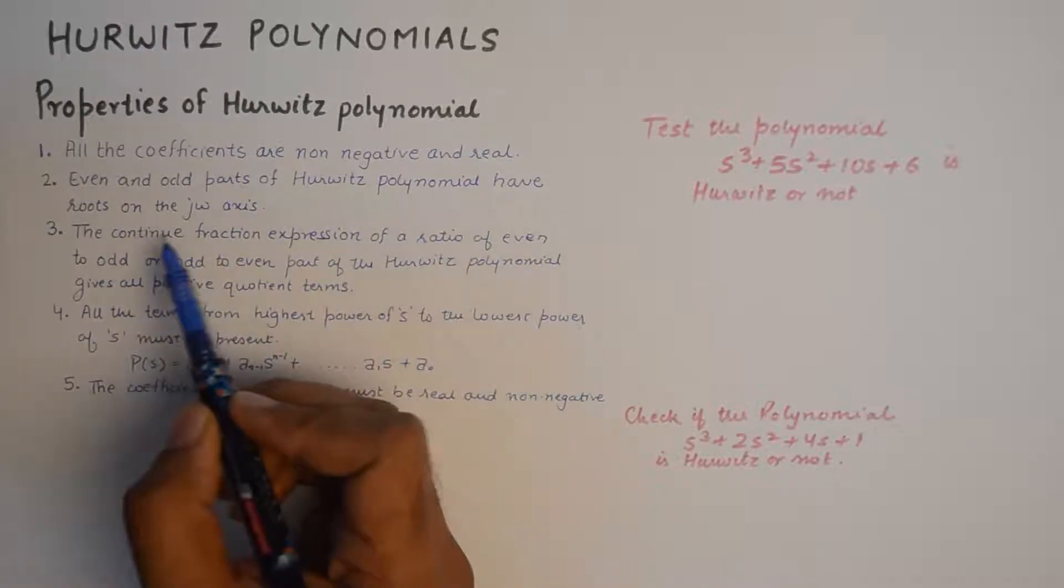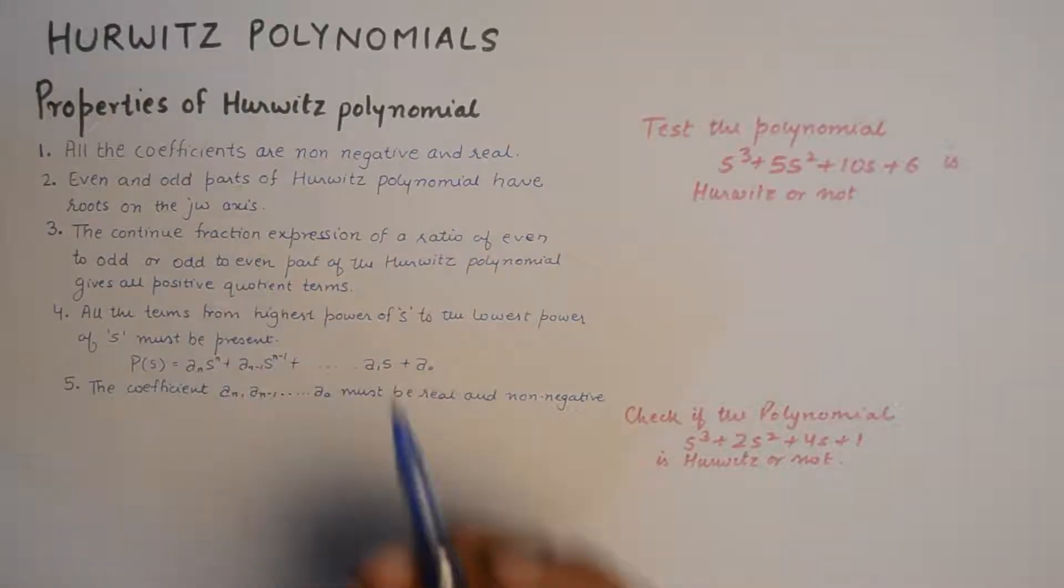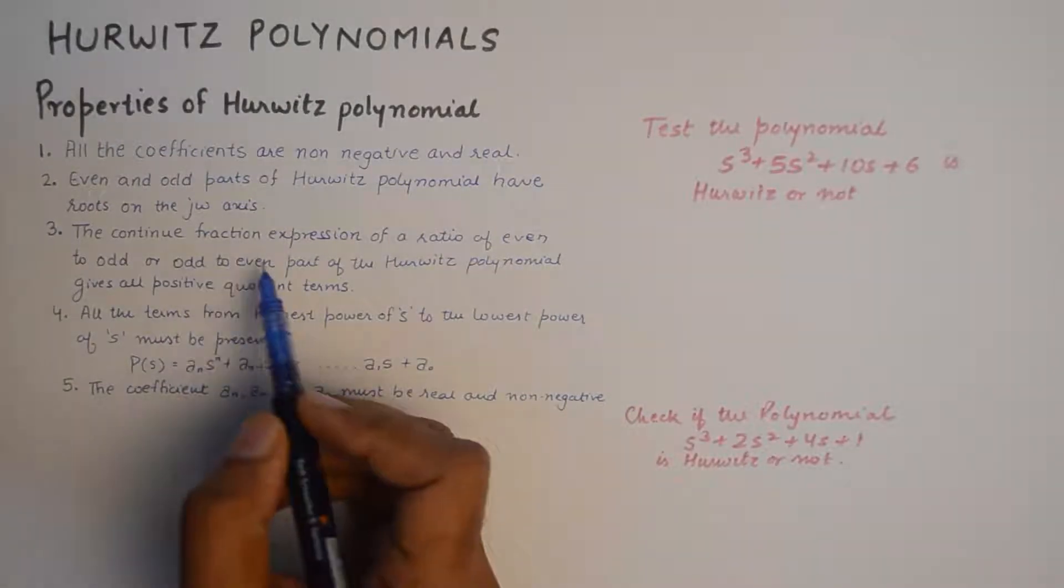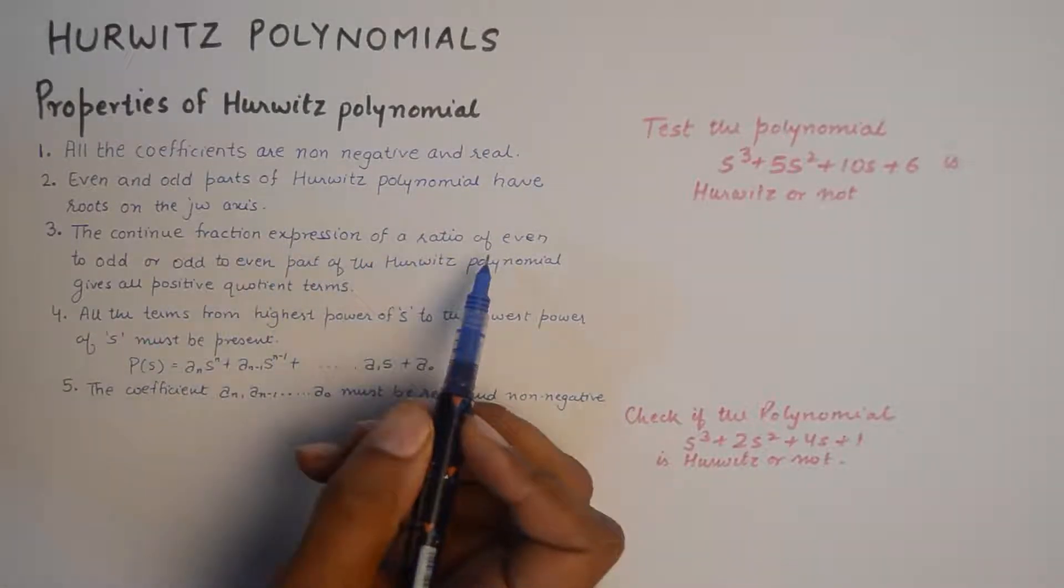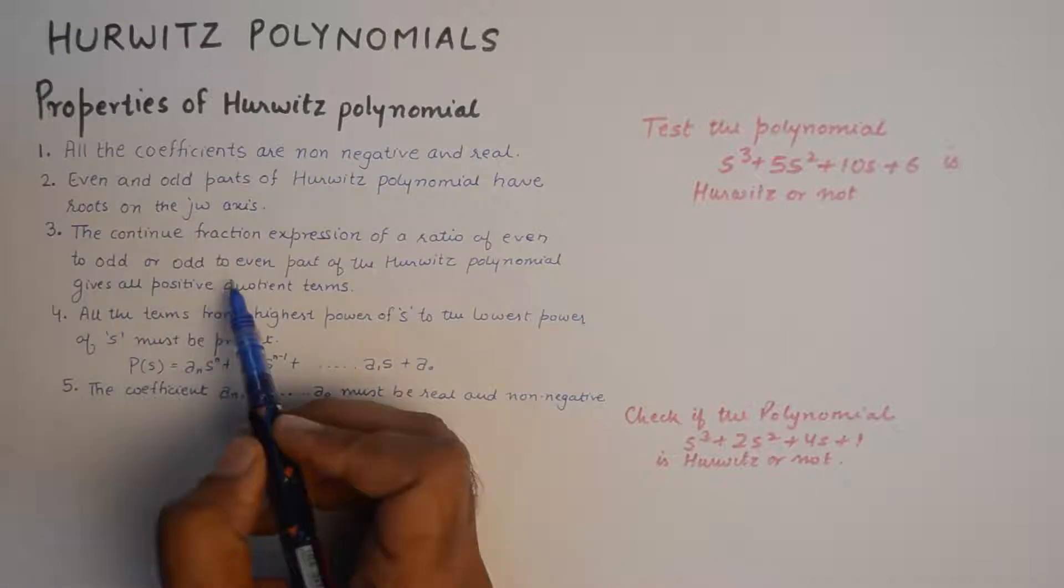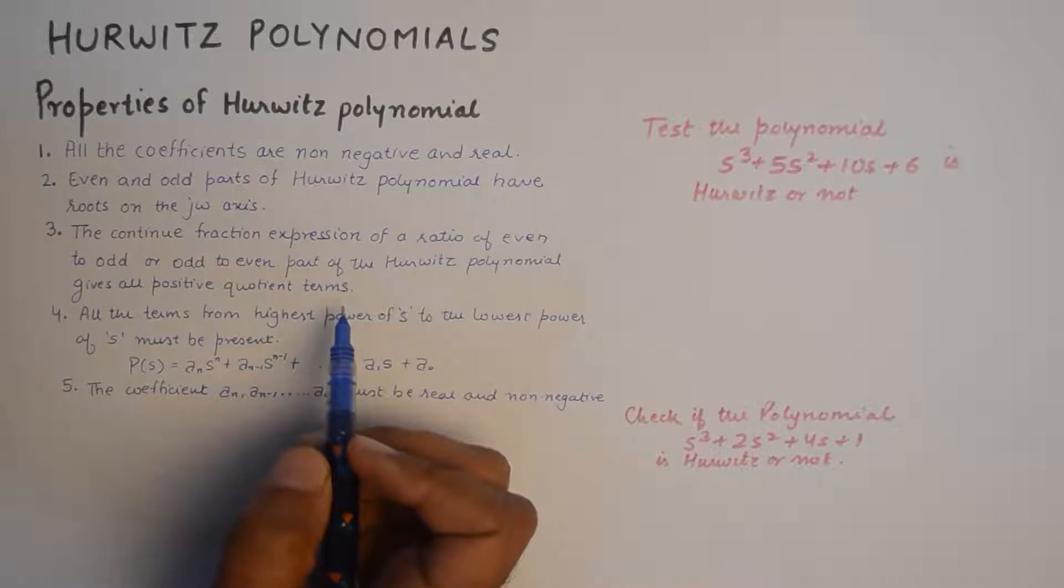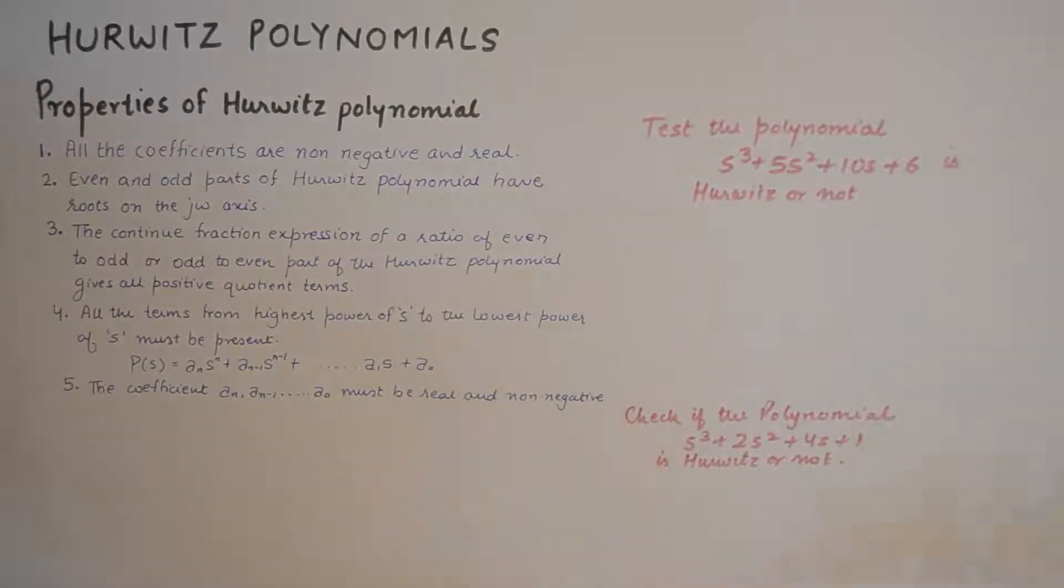Properties of Hurwitz polynomial are: all the coefficients are non-negative and real; the even and odd parts of Hurwitz polynomial have roots on the j-omega axis; the continued fraction expression of a ratio of even to odd, or odd to even part of the Hurwitz polynomial, gives all positive quotient terms.